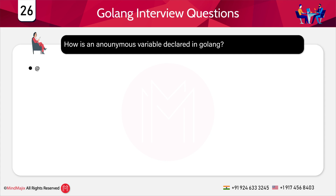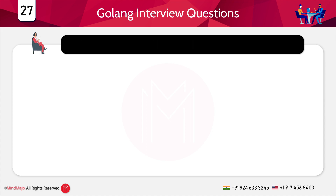How is an anonymous variable declared in Golang? Options: a) at-rate (@), b) underscore (_), c) star (*), d) hash (#). The answer is b) underscore. In Golang, whenever you declare a variable you need to use it, but if you want to declare a variable without using it, an anonymous variable — declared with underscore — is very handy.